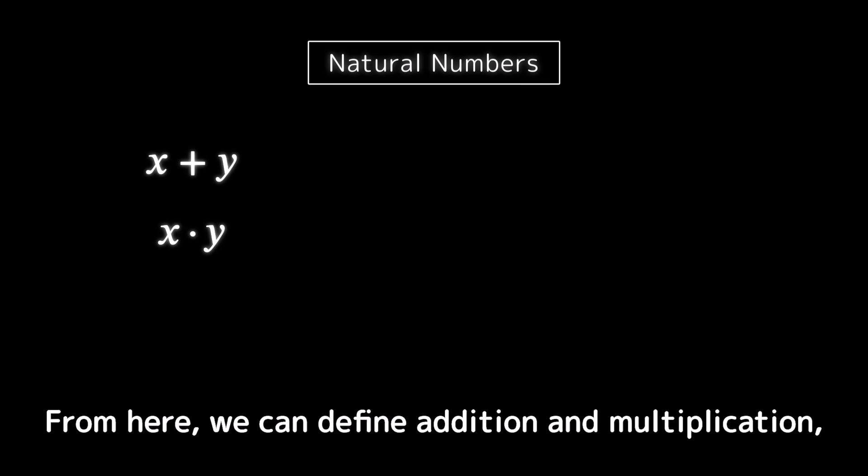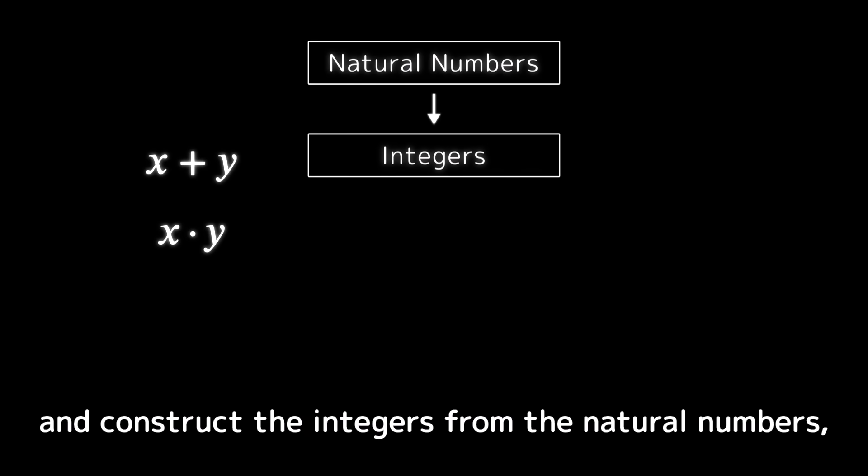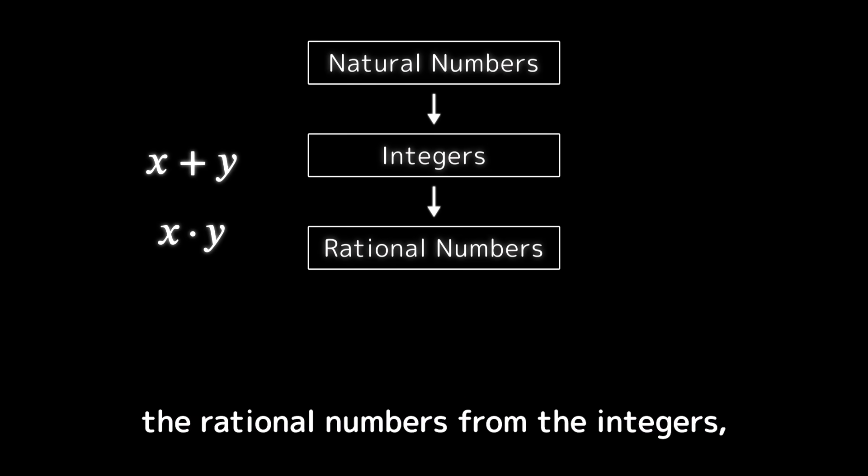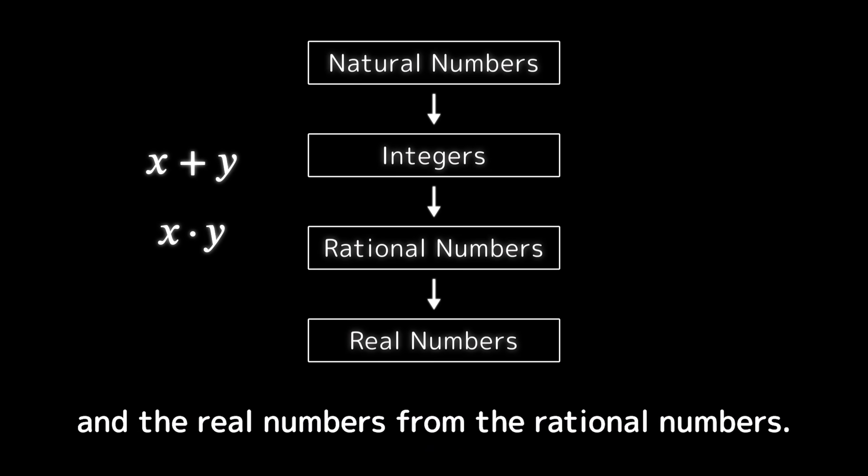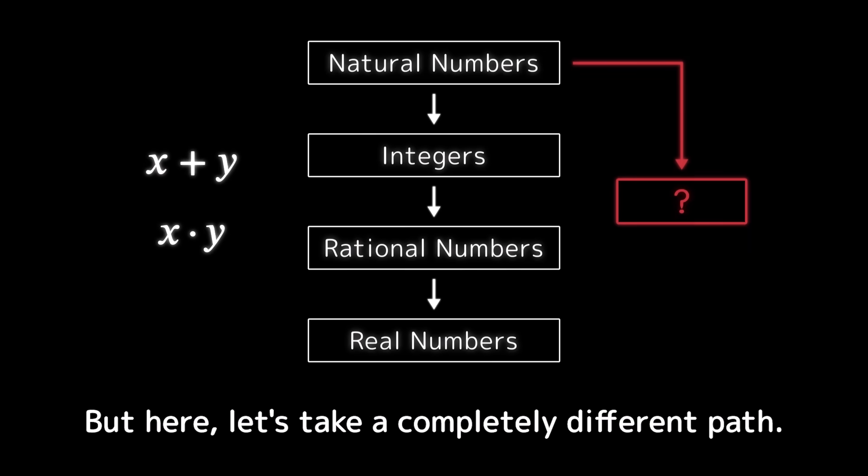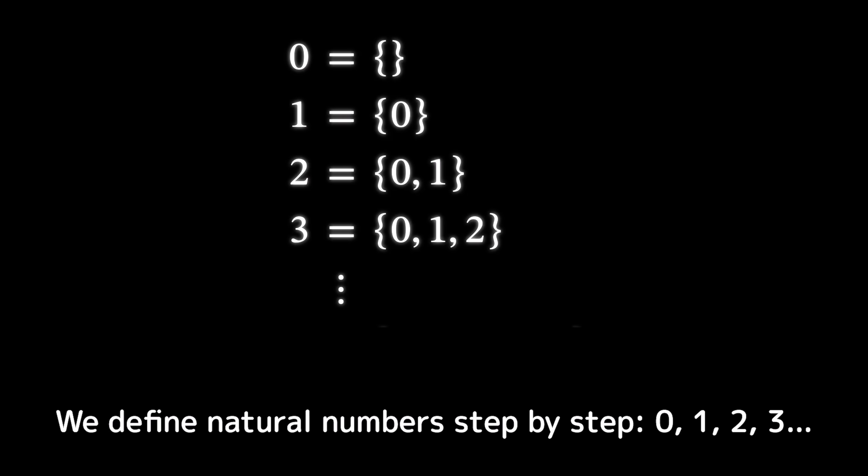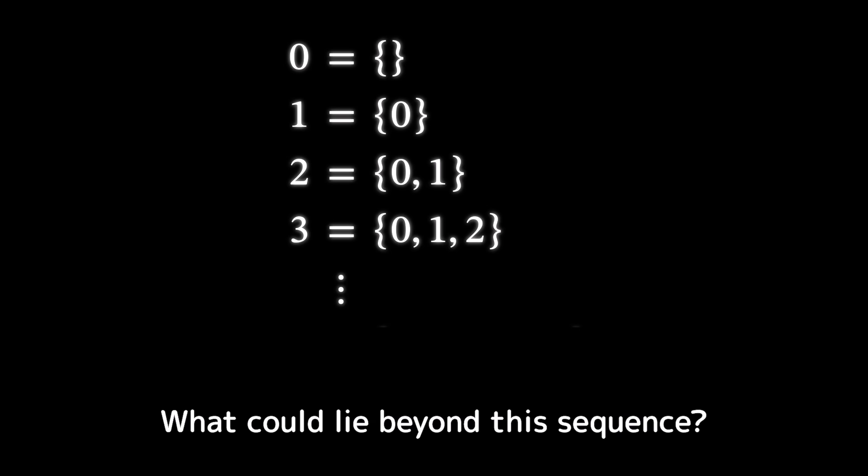From here, we can define addition and multiplication and construct the integers from the natural numbers, the rational numbers from the integers, and the real numbers from the rational numbers. But here, let's take a completely different path. We define natural numbers step by step. Zero, one, two, three. What could lie beyond this sequence?